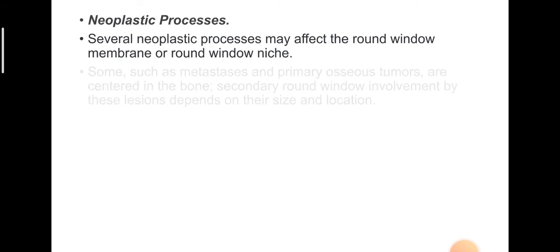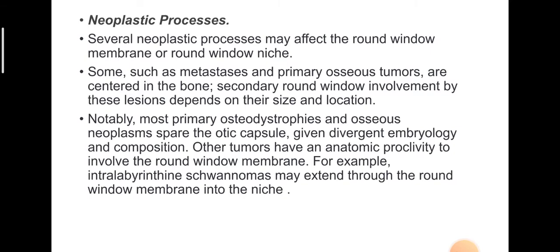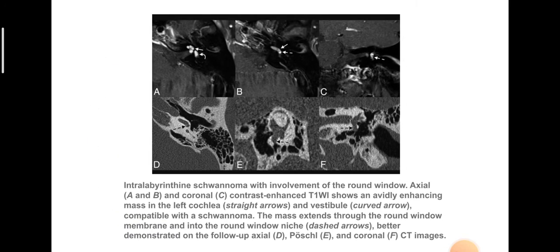Several neoplastic processes may affect the round window membrane or niche; metastases and primary osseous tumors are centered in bone, and secondary round window involvement depends on their size and location. Other tumors have an anatomic proclivity to involve the round window membrane; for example, intralabyrinthine schwannomas may extend through the round window membrane into the niche. CT images may demonstrate a soft tissue mass within the niche, and visualization often requires MR imaging. This case shows an intralabyrinthine schwannoma extending through the round window membrane into the round window niche.